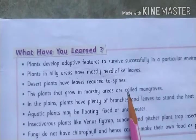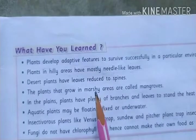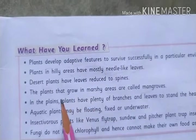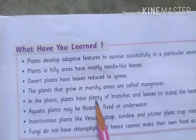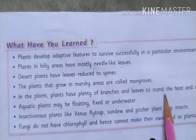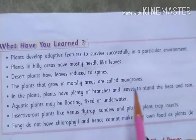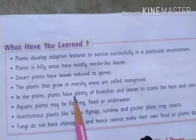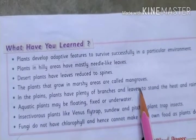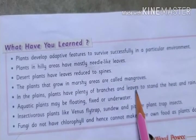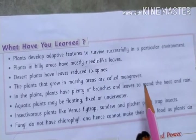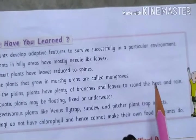Mangrove trees grow in muddy, watery areas. In the plains, plants have plenty of branches and leaves to withstand the heat and rain. Plains area plants like tea, neem, eucalyptus, and peepal trees stand straight and have plenty of leaves and branches because they give us shade.